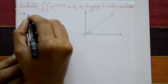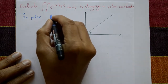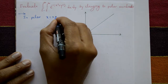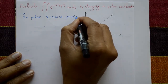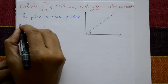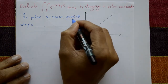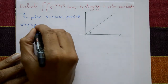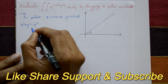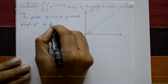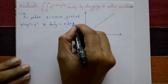In polar form, we take x equal to r cos theta and y equal to r sine theta. Squaring and adding, x square plus y square equals r square cos square theta plus r square sine square theta, which gives r square. And dx dy in polar form is r dr d theta.